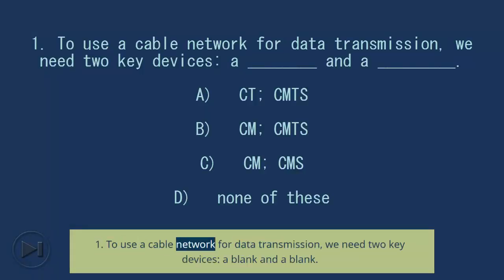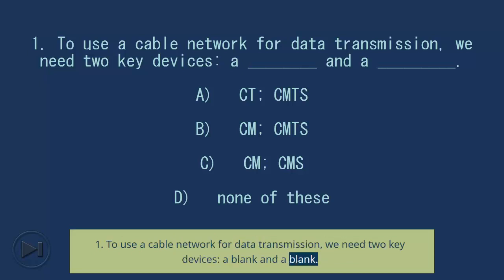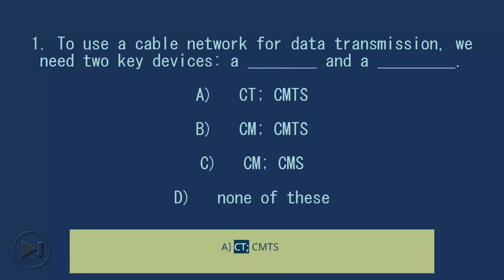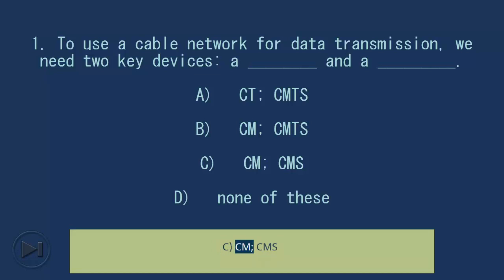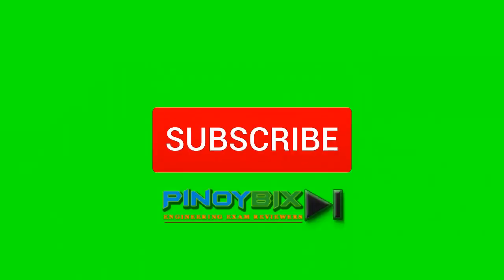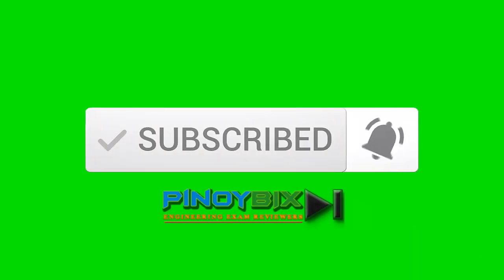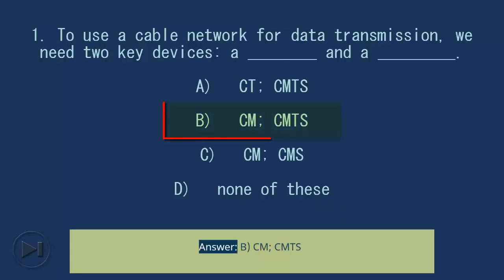Question 1: To use a cable network for data transmission, we need two key devices: a blank and a blank. A. CT-CMTS. B. CM-CMTS. C. CM-CMS. D. None of these. Answer: B. CM-CMTS.